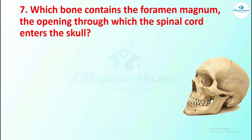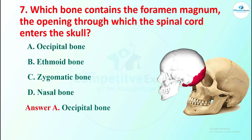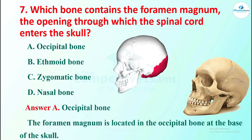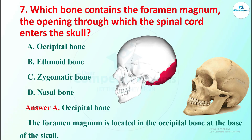Question 7: which bone contains the foramen magnum, the opening through which the spinal cord enters the skull? Options are occipital bone, ethmoid bone, zygomatic bone, and nasal bone. The right answer is occipital bone. The foramen magnum is located in the occipital bone at the base of the skull.